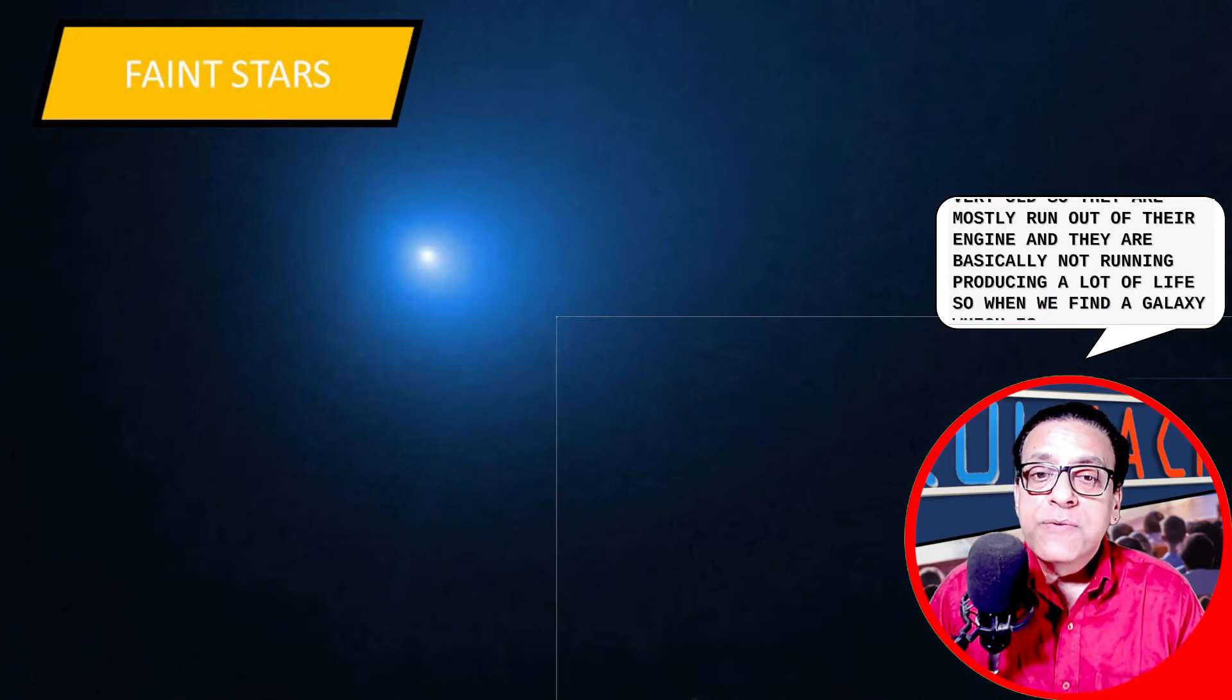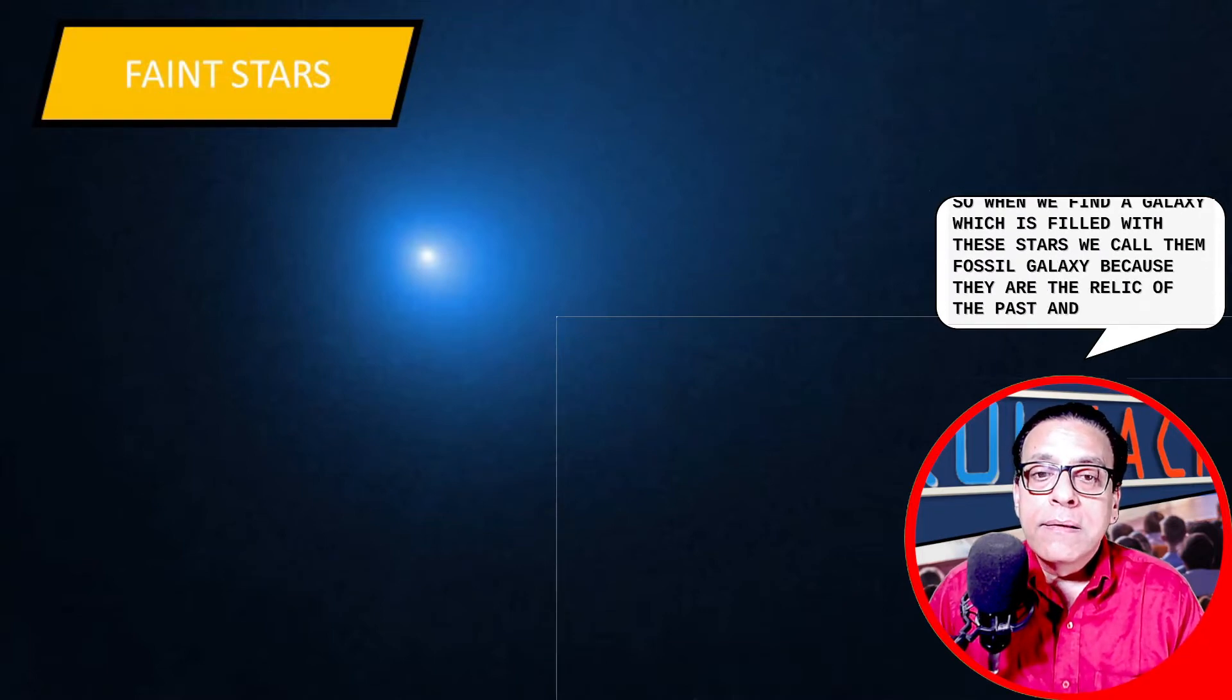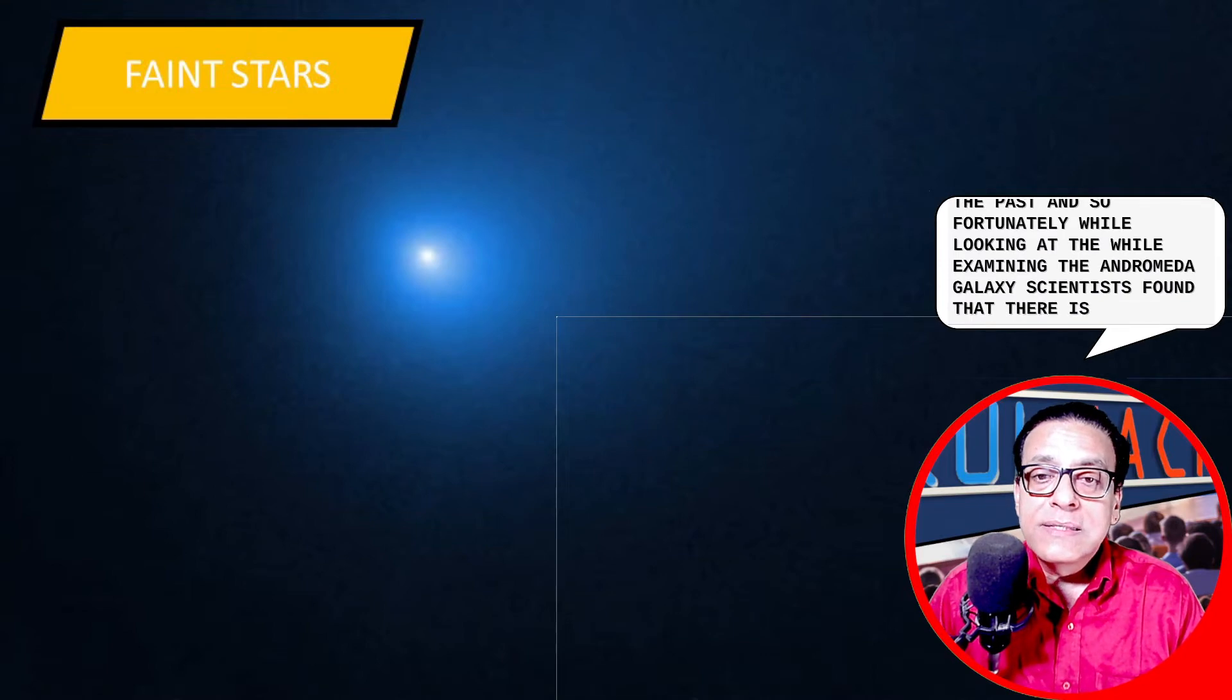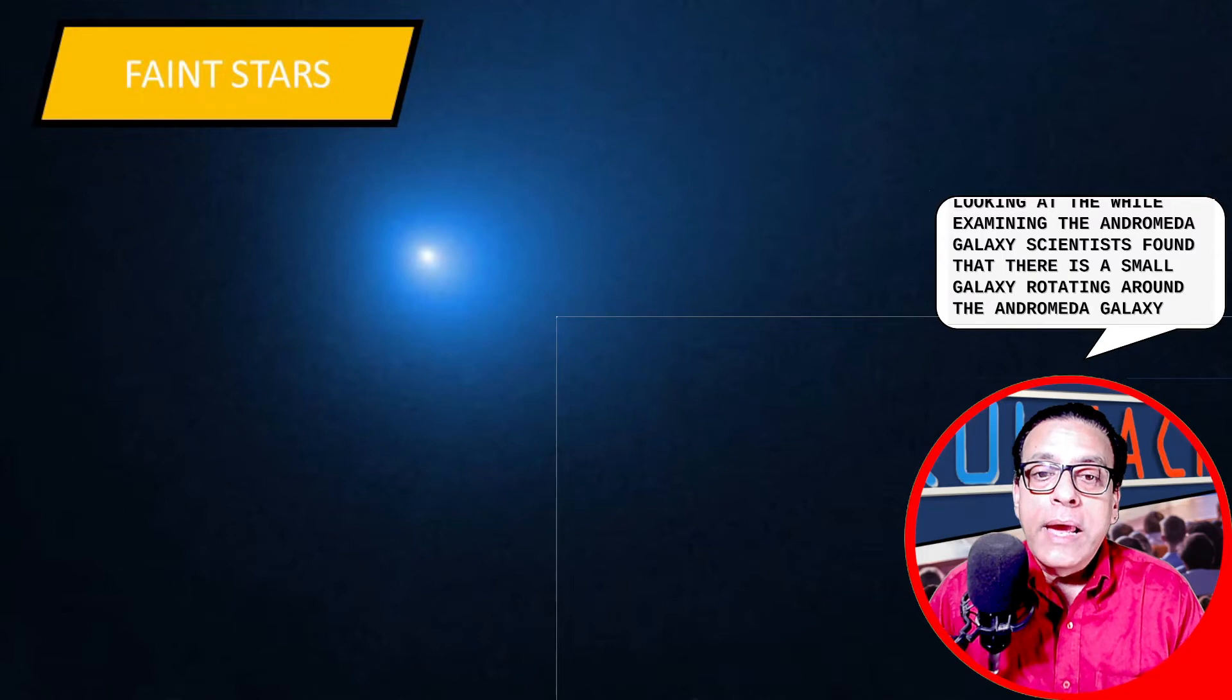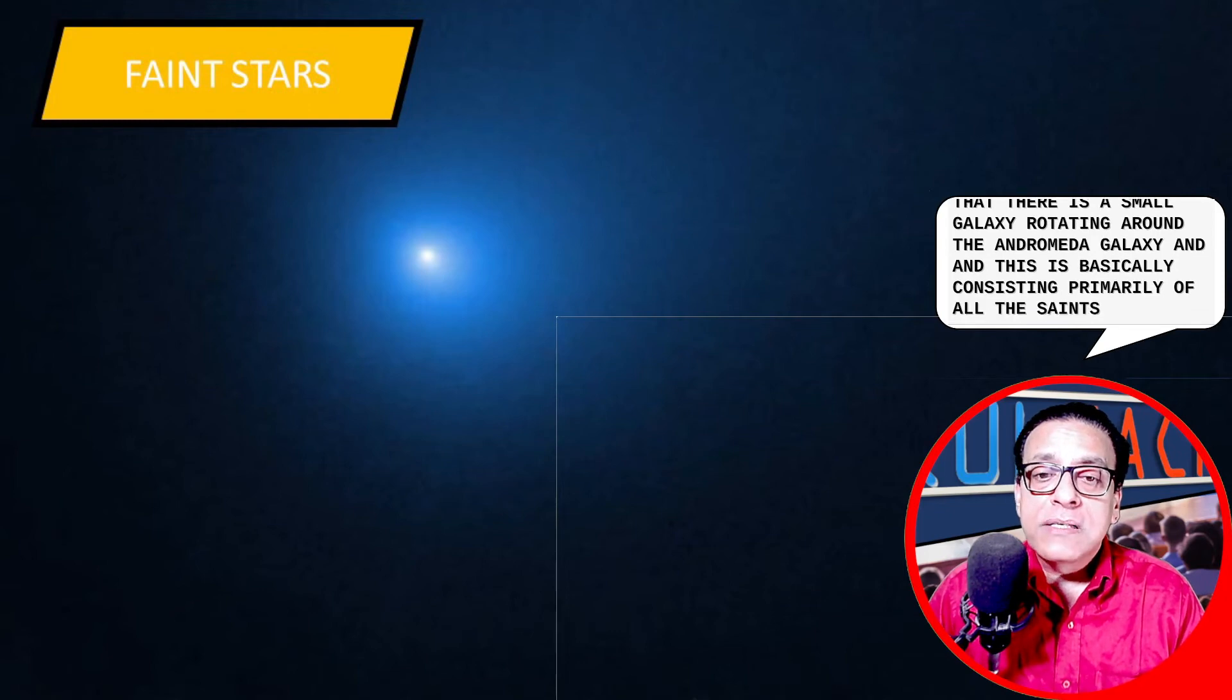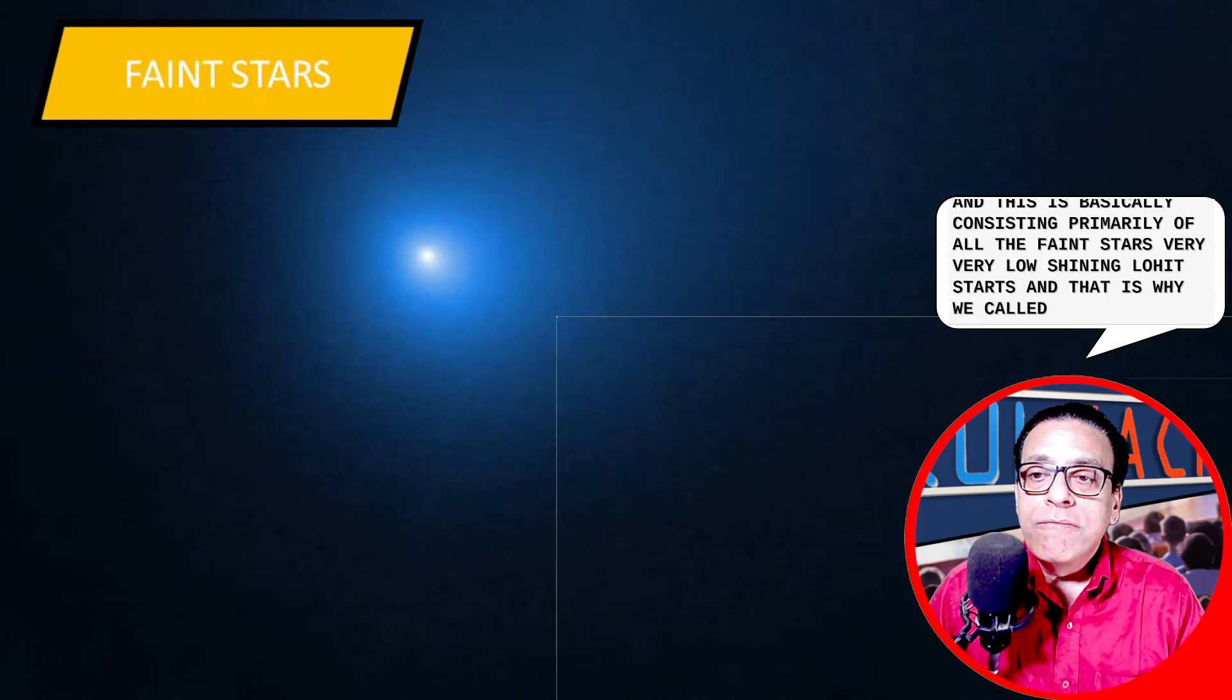So when we find a galaxy which is filled with these stars, we call them fossil galaxy because they are the relic of the past. And so fortunately, while examining the Andromeda galaxy, scientists found that there is a small galaxy rotating around the Andromeda galaxy. And this is basically consisting primarily of all the faint stars, very low shining, low heat stars.